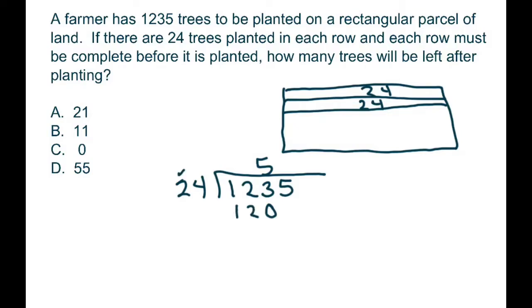Now subtract, and then 24 only goes into 35 one time, and then you get 11. That's your remainder.